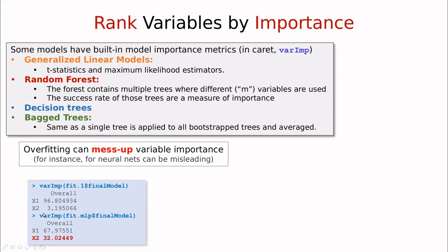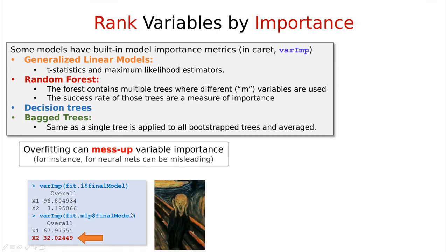Okay, but if you do that with a neural network with three neurons in the hidden layer, the importance is only 2 to 1. So this means that because of that overfitting, this neural network is saying that x2 is relevant when actually it isn't. Okay, so be careful with neural networks.